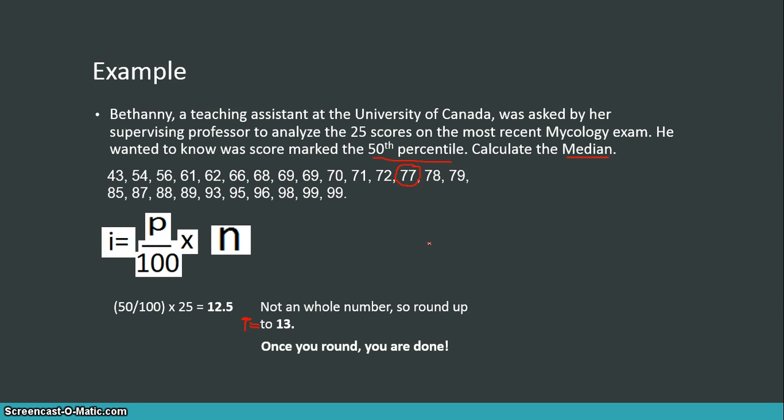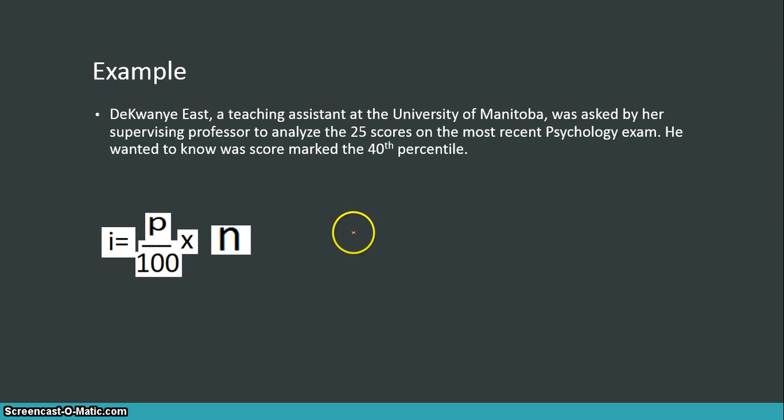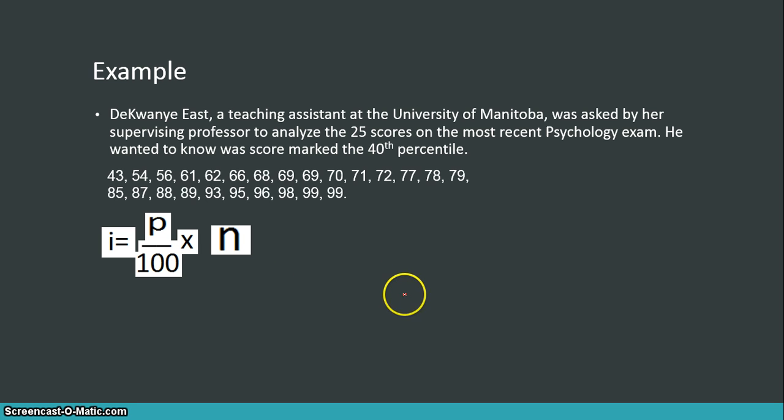All right, but let's try an example where you get an integer, where you get a clean, nice round whole number. Dequanye East, a teaching assistant at the University of Manitoba, was asked by her supervising professor to analyze the 25 scores on the most recent psychology exam. He wanted to know what score marked the 40th percentile. So, again, we have our 25 scores, and we're going to do the same process as last time. Our P is going to equal 40, because that is the percentile we're looking for, and our N is going to be equal to 25, because there are 25 numbers in the data set. Again, arranged from least to greatest here.